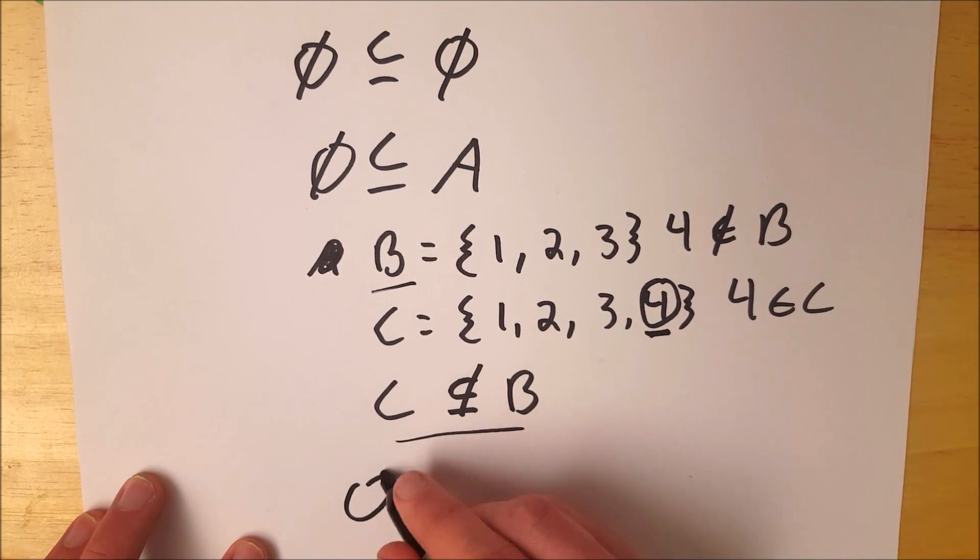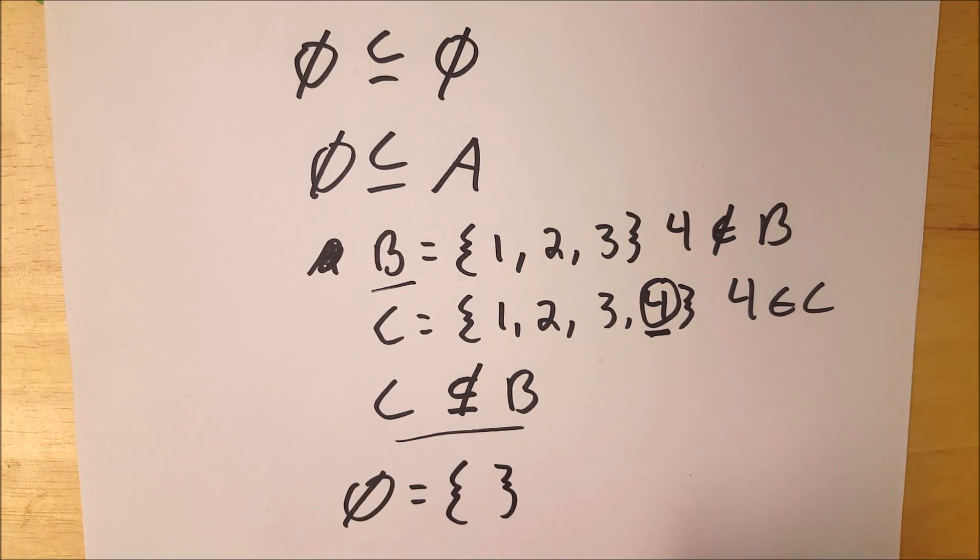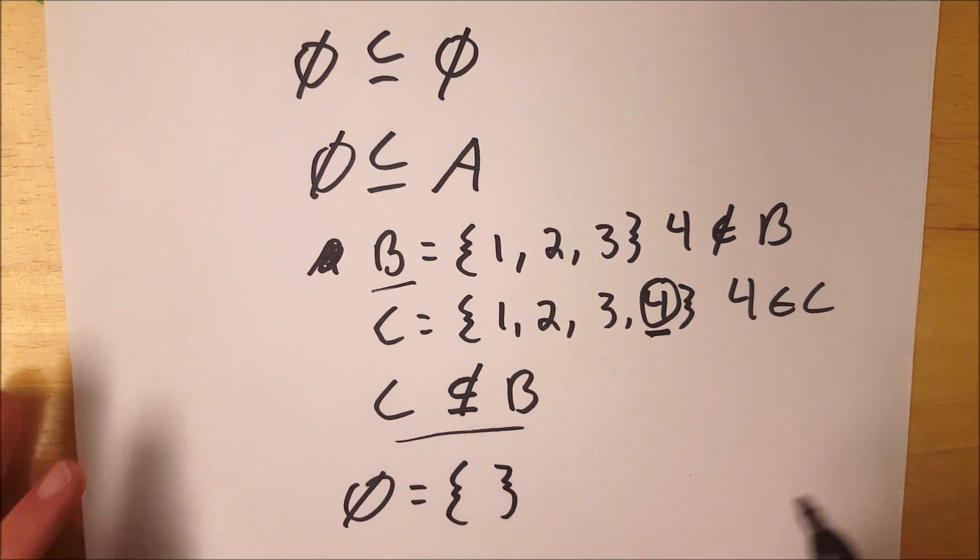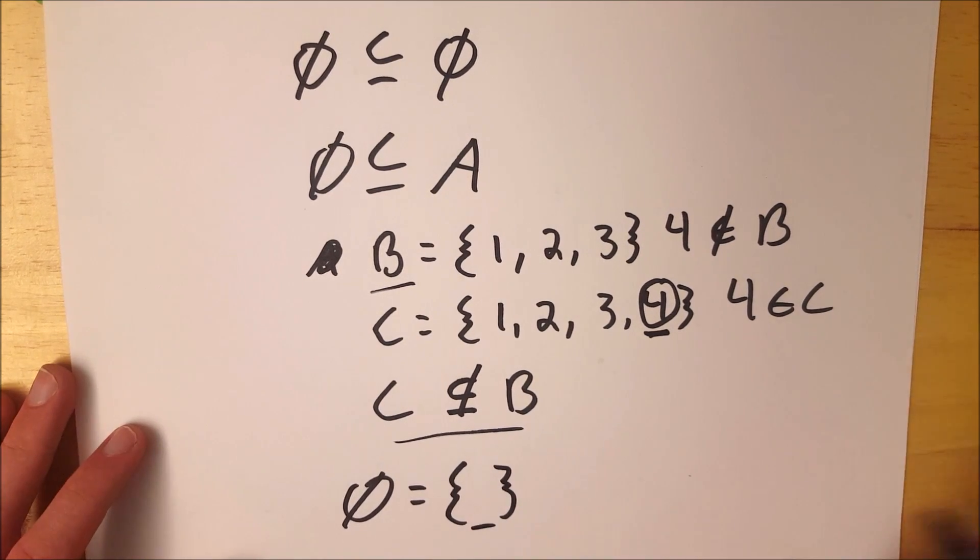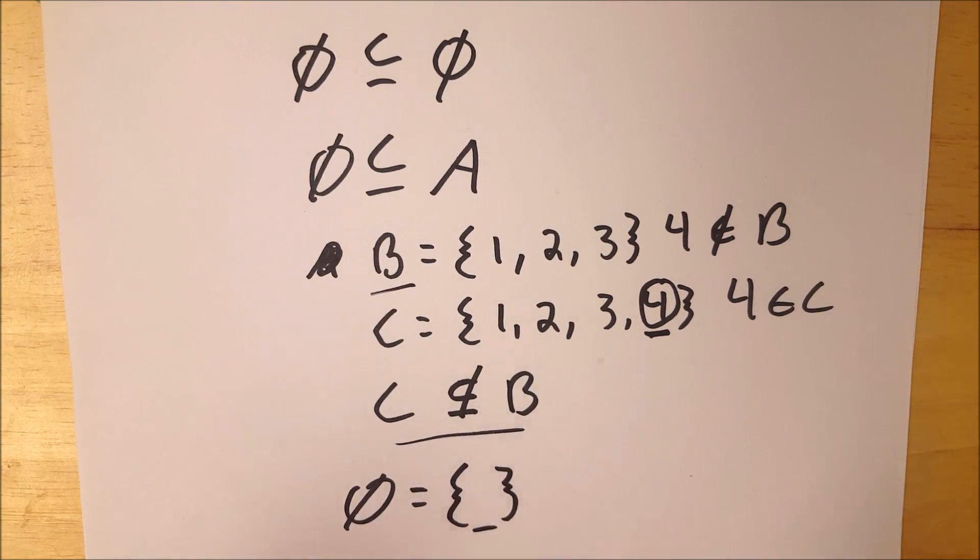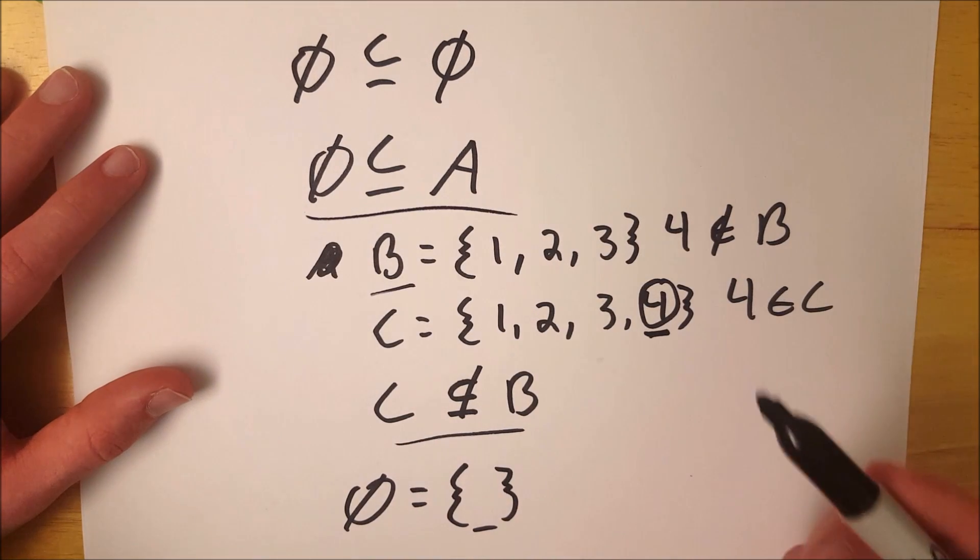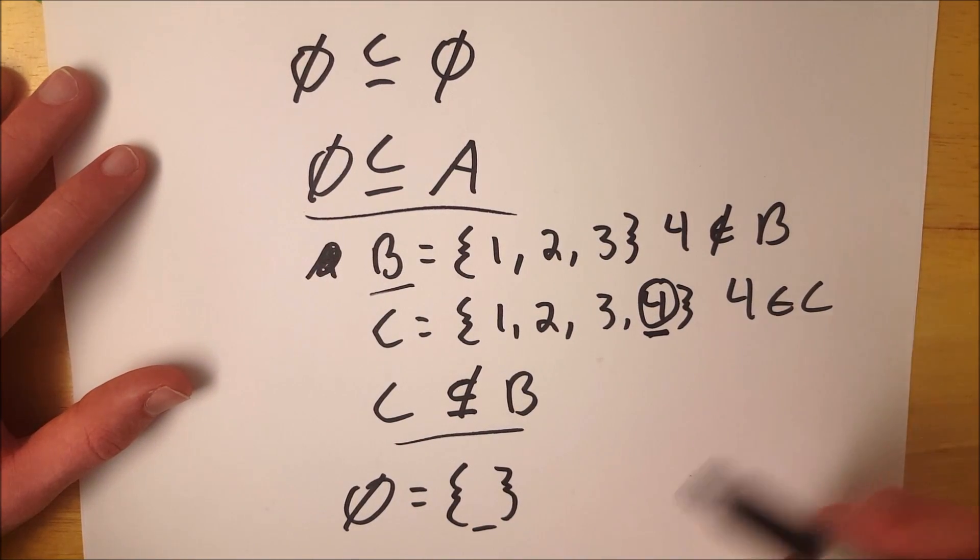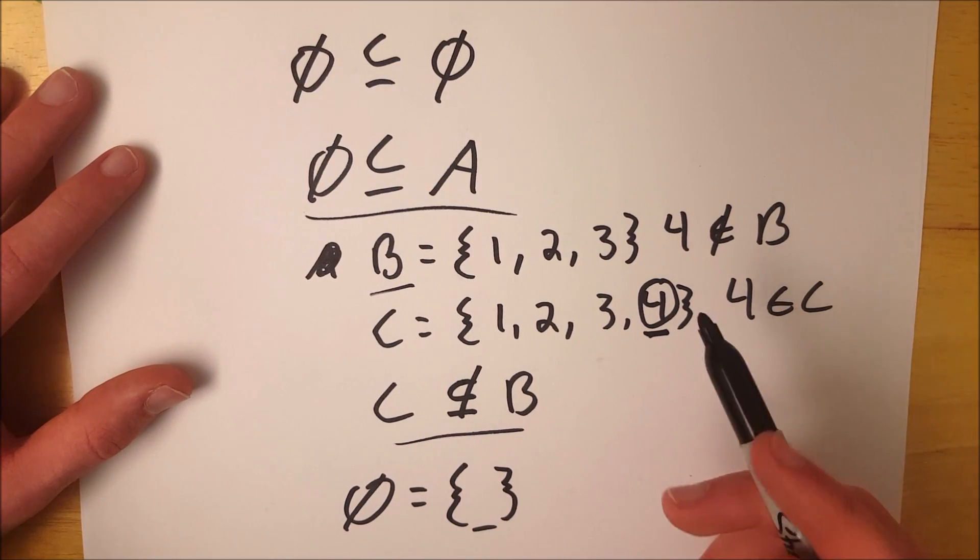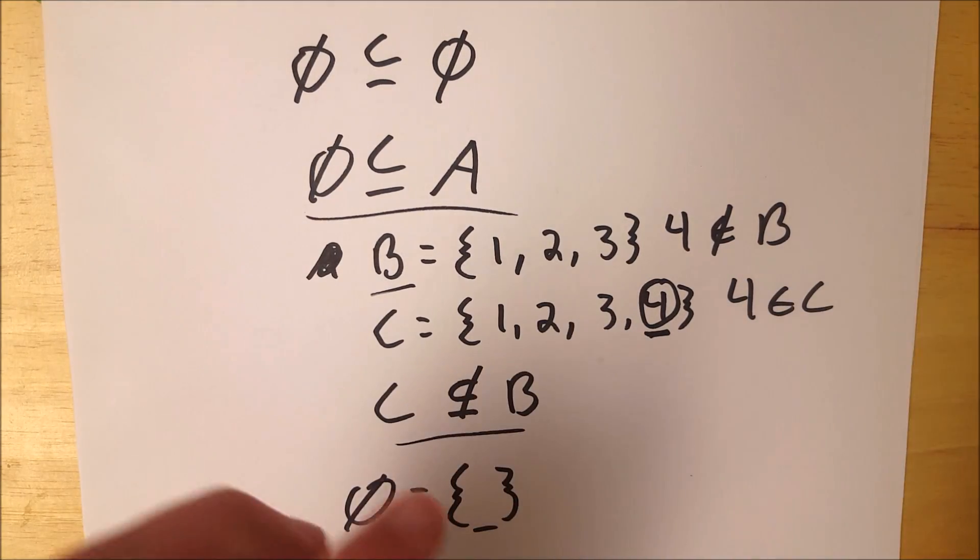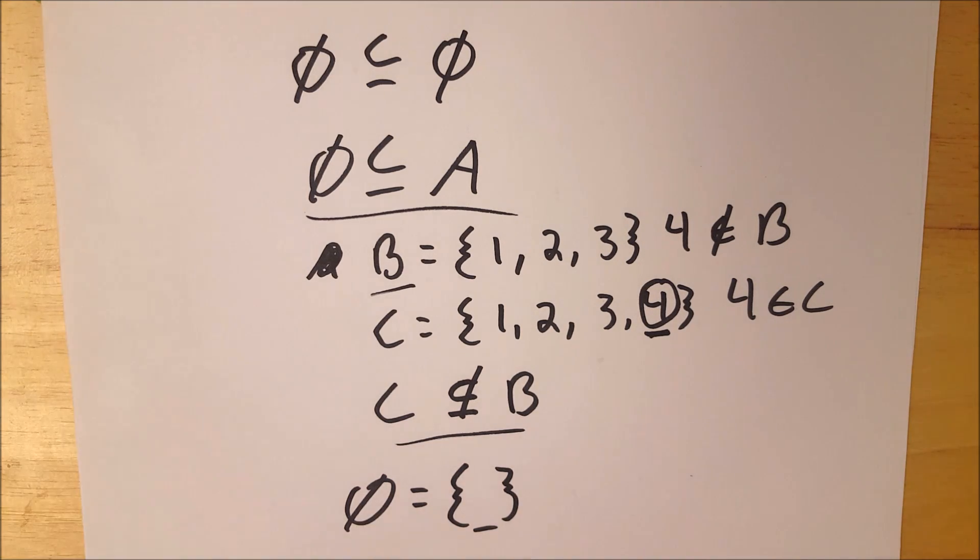Now in the case of the empty set, does the empty set have any element in it that would disqualify it from being a subset of any other set? Well, of course not. It doesn't have any elements in it. So of course, if you need to have an element that other sets don't have in order to not be a subset of those other sets, the empty set is naturally going to be a subset of every single set because it doesn't have an element in it to disqualify it from ever being a subset. So I hope that helped explain it to you if you're wondering why on earth the empty set is in fact a subset of every set.